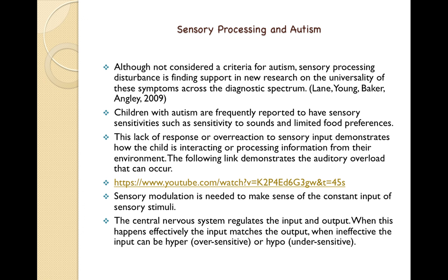When the system is ineffective, the input can be hyper (over-sensitive) or hypo (under-sensitive). For example, someone who is hypersensitive would find the tastes of foods overwhelming and would prefer food to be plain or bland. Someone who is hyposensitive would be looking for foods that are spicy or very salty — they would look to enhance the flavor to satiate their sensory needs.